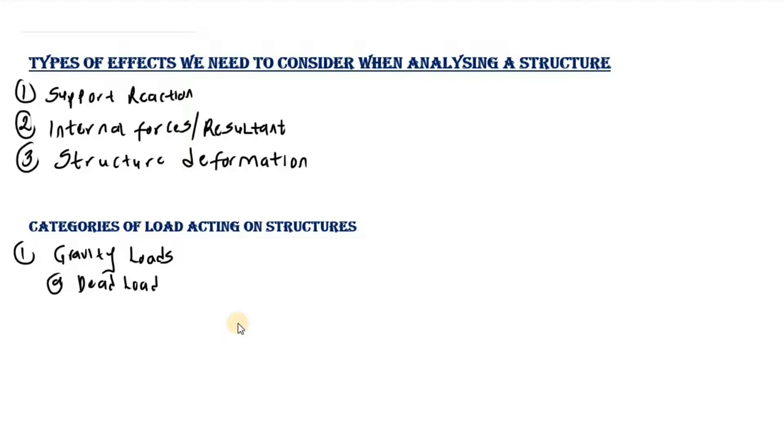The dead load would be the self-weight of the structure - that is, the concrete, the steel we use for building the structure. Basically, this is the component of the building that is not moving, like the slabs, the beams, the columns, the girders, the shear walls, etc. So these are the dead load. Then